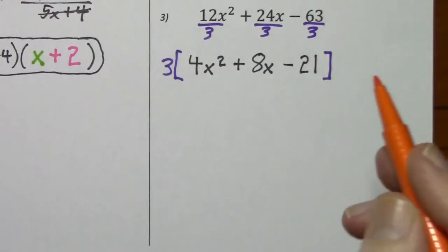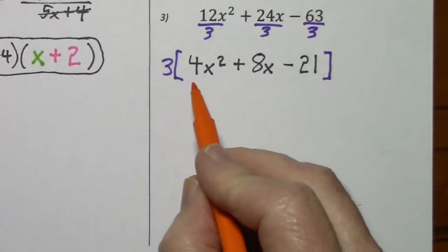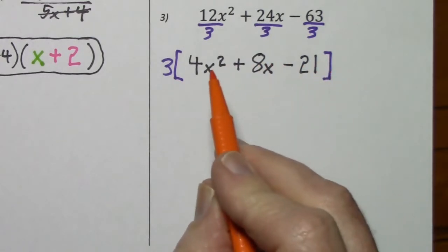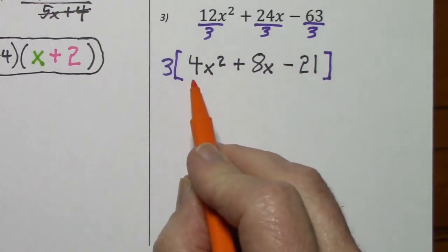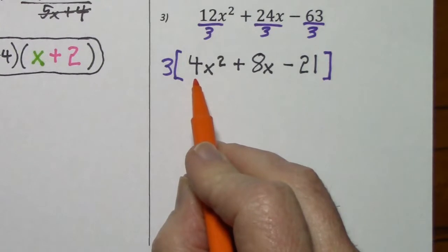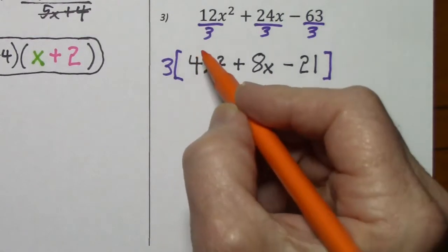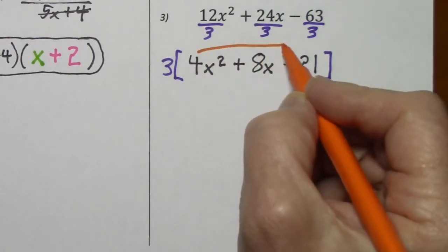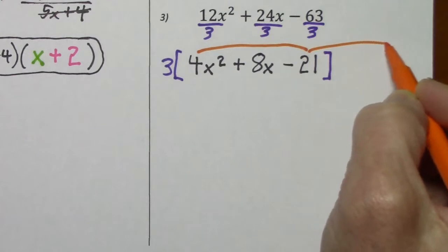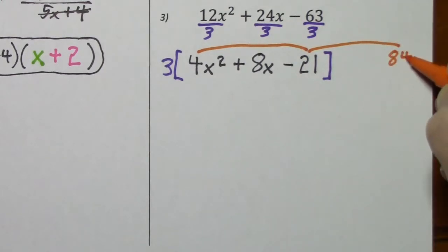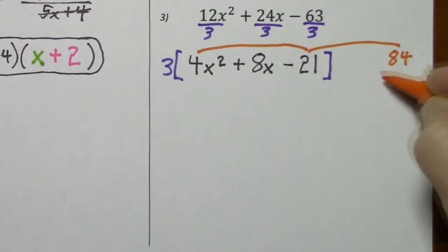Then you continue down the list. Do you have 2 terms? No. Do you have 3 terms? Yes. Is the leading coefficient other than 1? Yes. We'll use factor by grouping — multiply first times last and list all the factors.